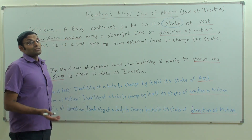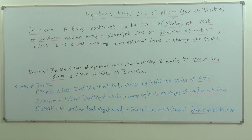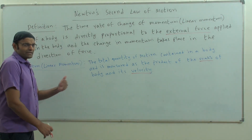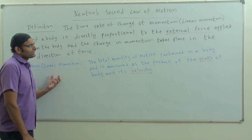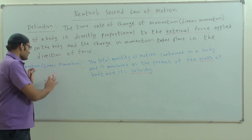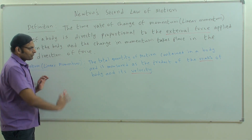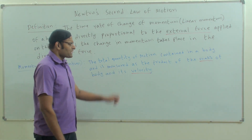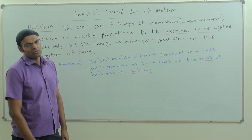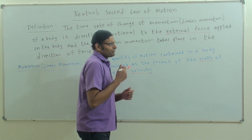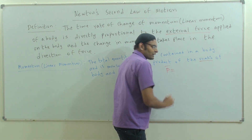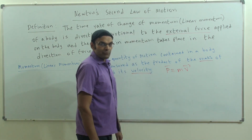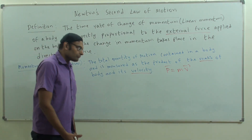Now let us discuss Newton's second law of motion. Before that, I would like to discuss the concept of momentum or linear momentum. The total quantity of motion contained in a body is measured as the product of mass and velocity. Momentum is denoted as P-bar and equals mass into velocity. Momentum is a vector quantity because it is a product of mass into velocity.